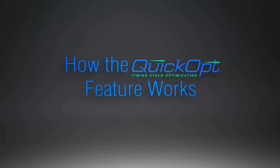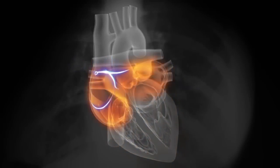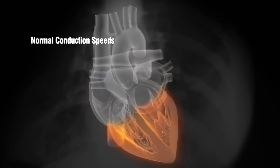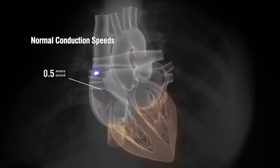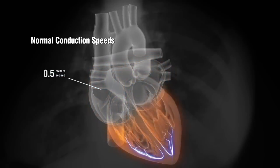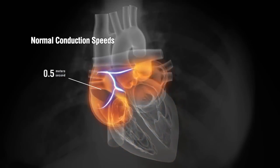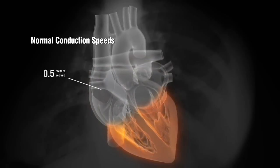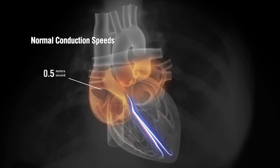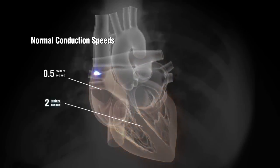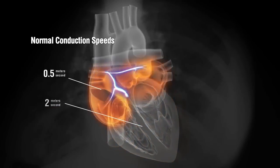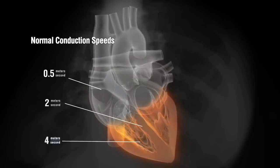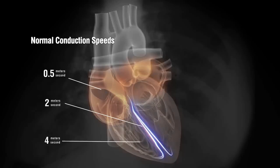How the QuickOpt feature works: QuickOpt optimization measurements are based upon the heart's conduction properties. It is well known that the atria and ventricles conduct at a speed of approximately one-half meter per second on average. While the impulse slows down through the AV node, it accelerates to a speed of approximately two meters per second through the bundle branches and rapidly accelerates again to approximately four meters per second in the Purkinje network.